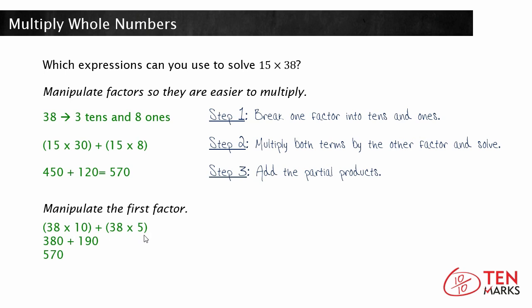38 times 10 is 380, 38 times 5 is 190. And when you add these two partial products together you get 570. So notice using both ways will get you the same answer.